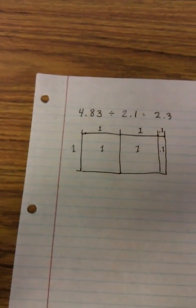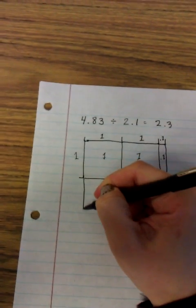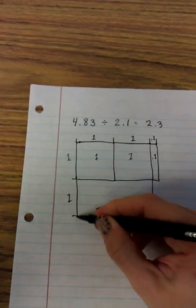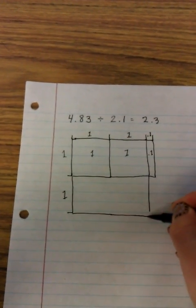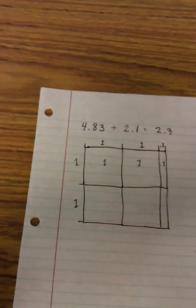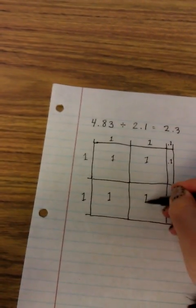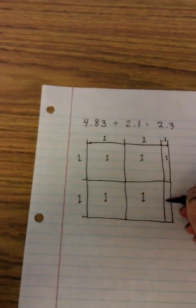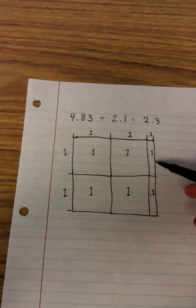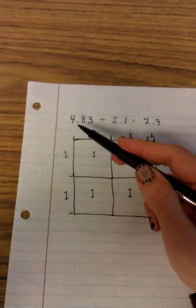I'm trying to get to 4.83 so I'm going to multiply by another one whole because I know that I can. So I'm going to fill that one in, it's hard to do this one handed, I need to hold the paper down. Alright, so times another one whole I have another 2.1 which would add up to 4.2. Not quite there yet.